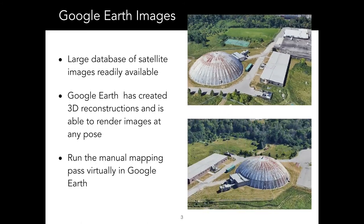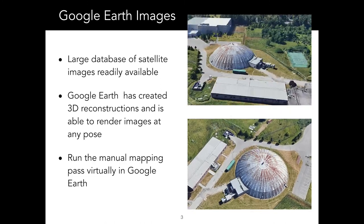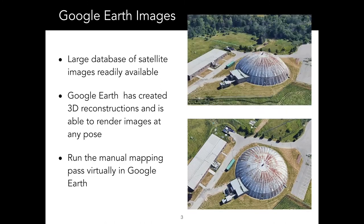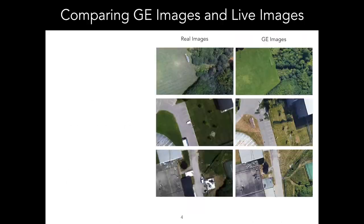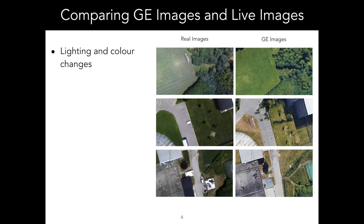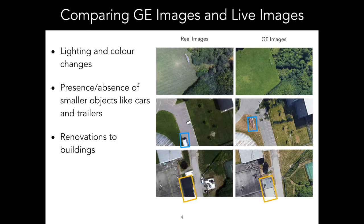A previous paper from our lab proposed replacing the manual outbound mapping pass in visual teach and repeat with an offline virtual pass in Google Earth. The biggest issue with this is that the Google Earth images are much older. This means there are changes in lighting and color, the placement of smaller objects like cars or trailers has changed, and there are additions or renovations to some of the buildings. Because of this, relying purely on features for matching doesn't work.